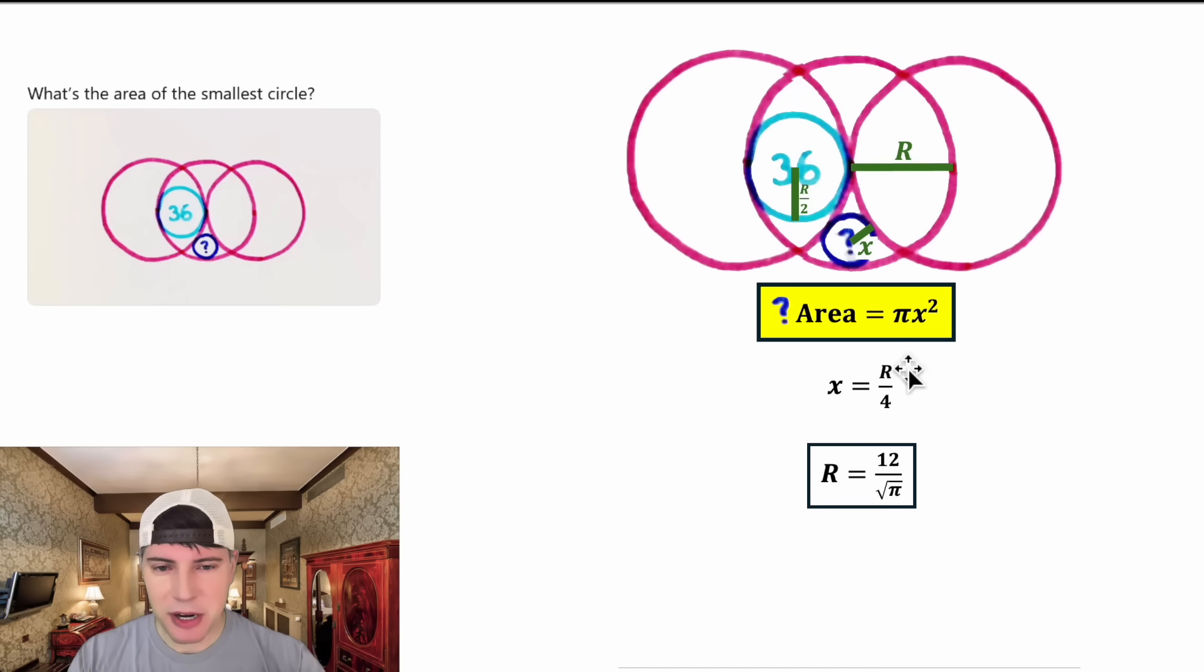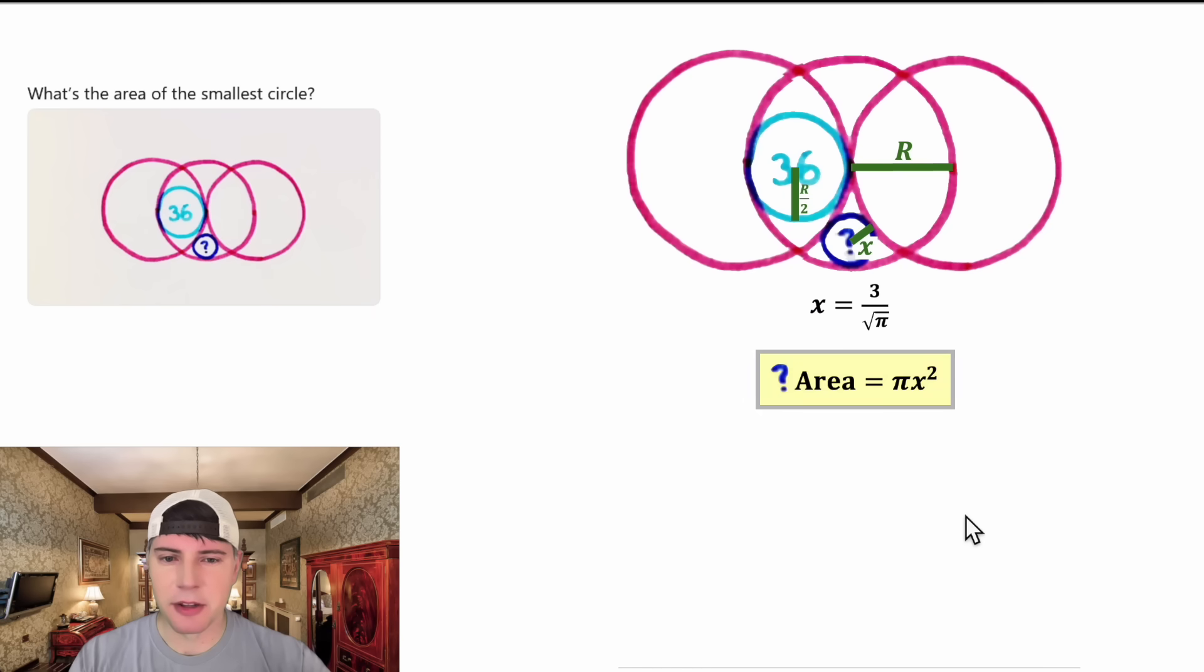Before we plug it in, let's rewrite the big R over 4 as one fourth times big R. Now in the place of the big R, we can plug in 12 over root pi. We can simplify this 12 on top and the 4 on bottom to give us a 3 on top. Now the 1 over 1 isn't doing anything. So x is equal to 3 over the square root of pi. Now we're done with the big R.